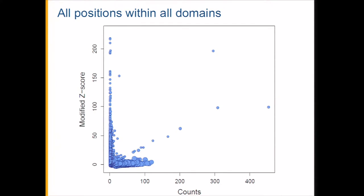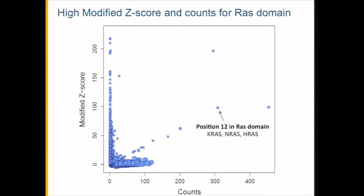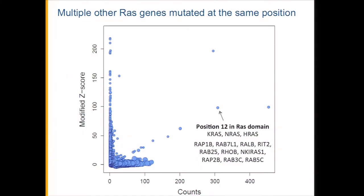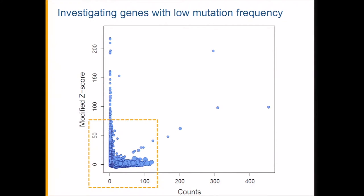There are what we'd consider noisy points with low counts that appear significant, but I'll show how we correct for that. The KRAS example corresponds to this particular point, representing position 12 in the RAS domain. What's also interesting about other outlier points is that we can look at their homologs and identify others mutated at low frequency but at the same functional position as in these other domains.